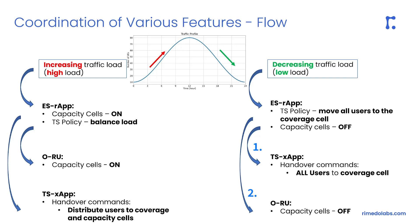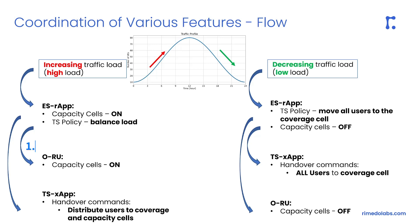If this step is completed, then the RAP sends a command to turn off cells. In the second case, when traffic load is increasing, the energy saving RAP also takes a two-step action but in reverse order. Firstly, RAP sends a command to turn on cells, and if that step is completed, RAP creates a policy for the traffic steering XApp to distribute all users to both coverage and capacity cells.